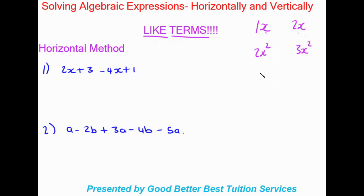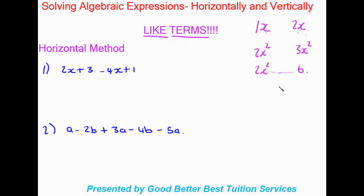If I had 2x² and 6, these are not like terms. One is x squared and the other is a constant term — there is no variable or exponent. So these are not like terms, and that's what we're going to look at mostly when solving these algebraic expressions.